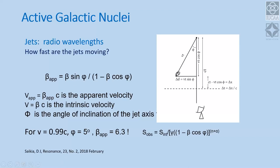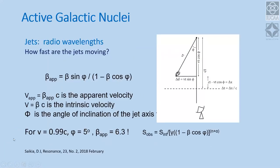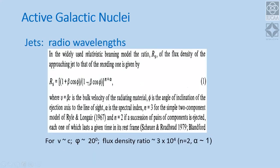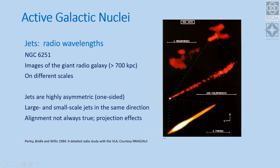At these high velocities, the emission also gets Doppler boosted — that is why the jets appear one-sided, since the one going away from you is Doppler diminished. The flux density ratio of approaching to receding jet goes as ((1 + β·cos(φ)) / (1 − β·cos(φ)))^(2+α) or ^(3+α), depending on the model. For velocities of the order of c and inclination angles of about 20 degrees, you can get very large flux density ratios, making the receding jet effectively undetectable.